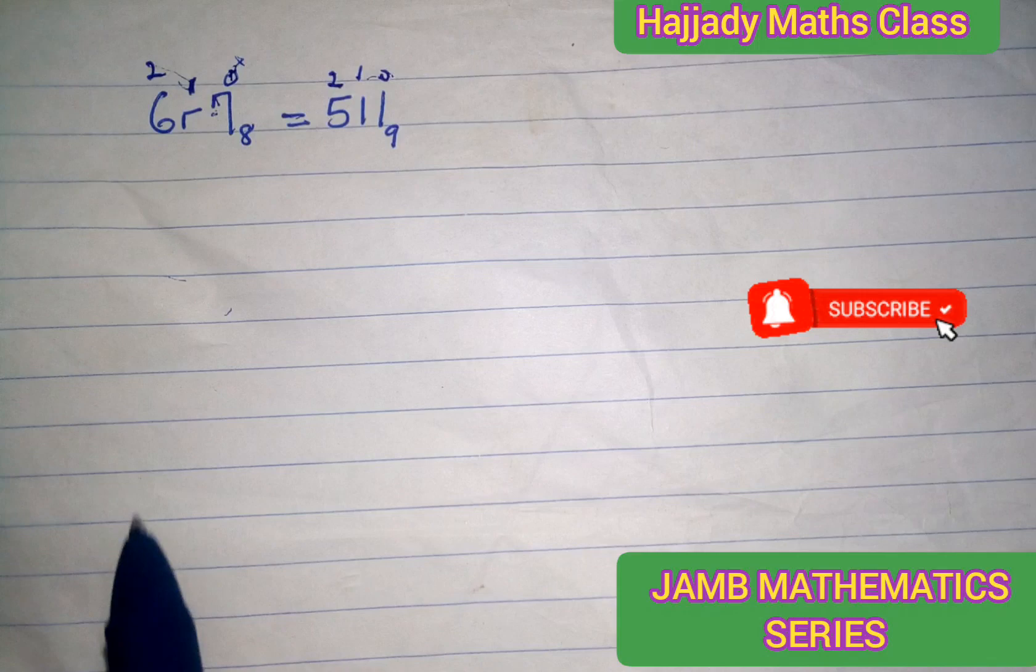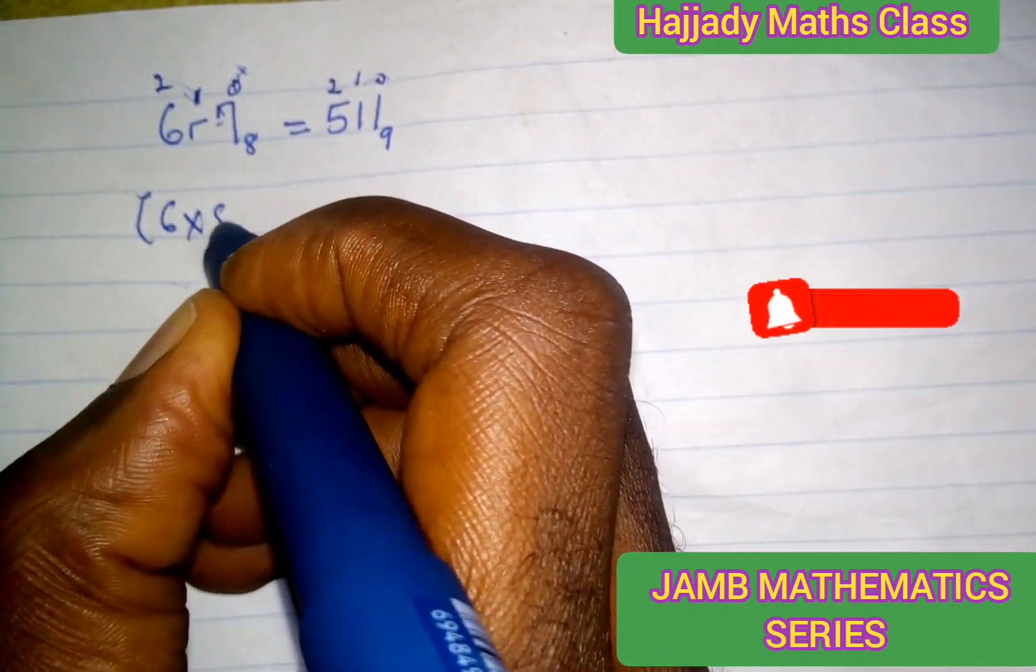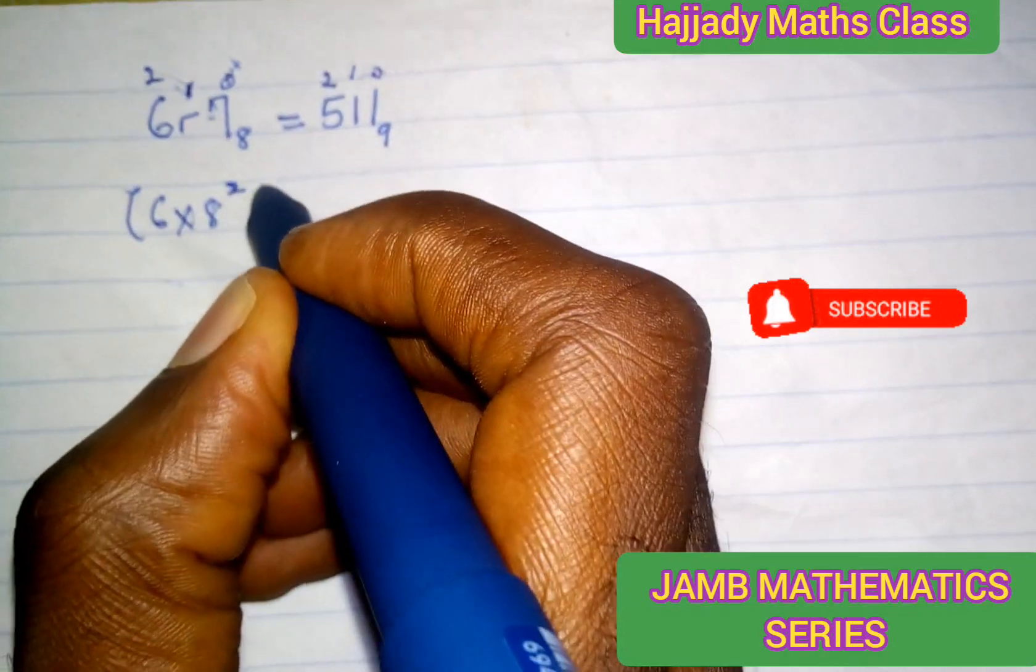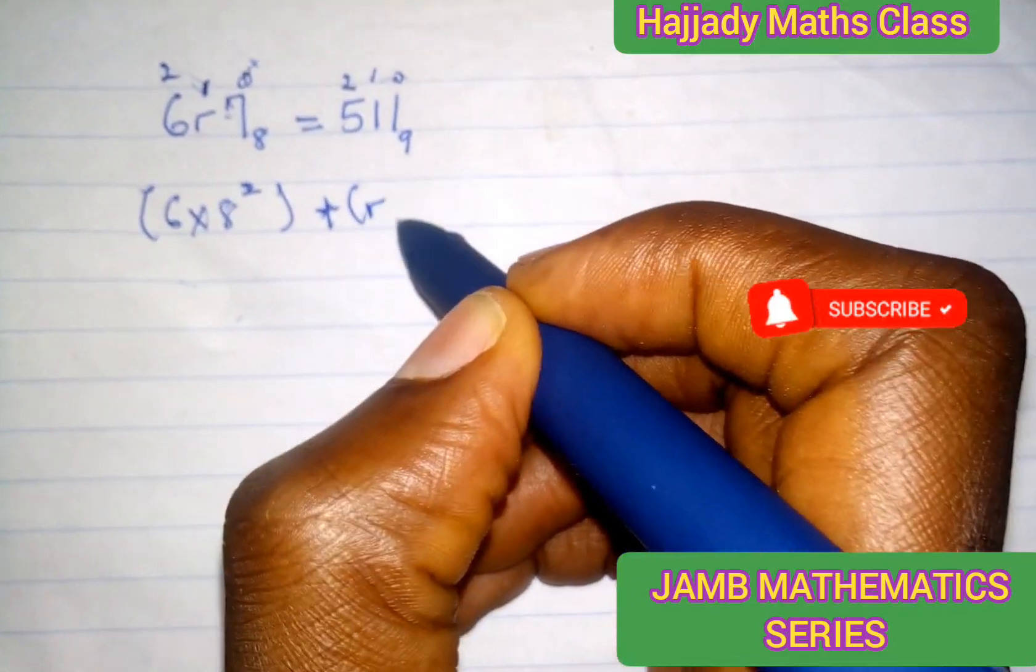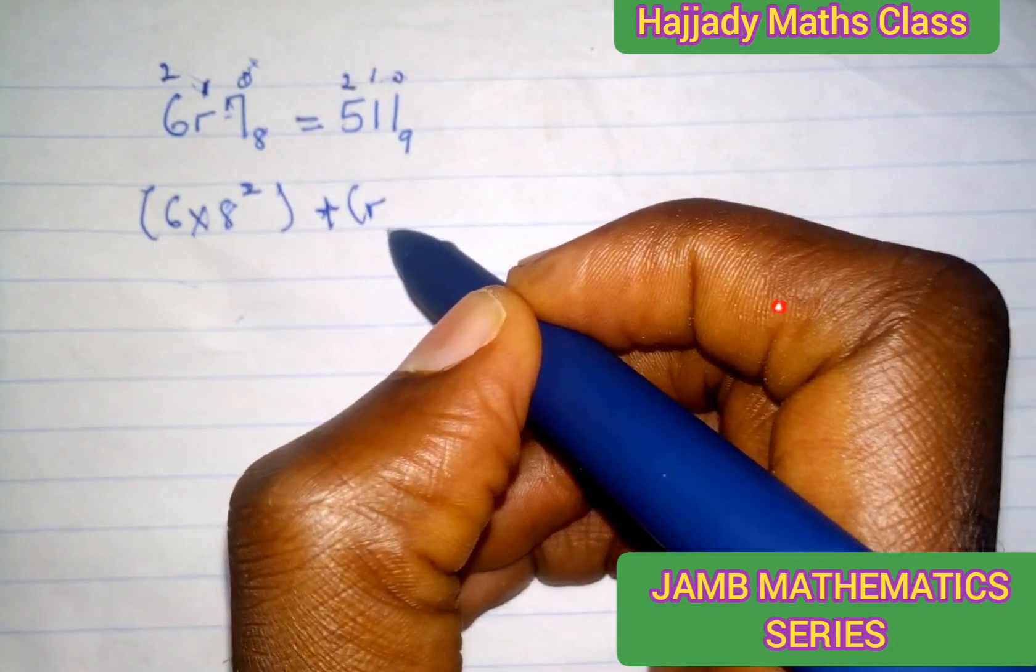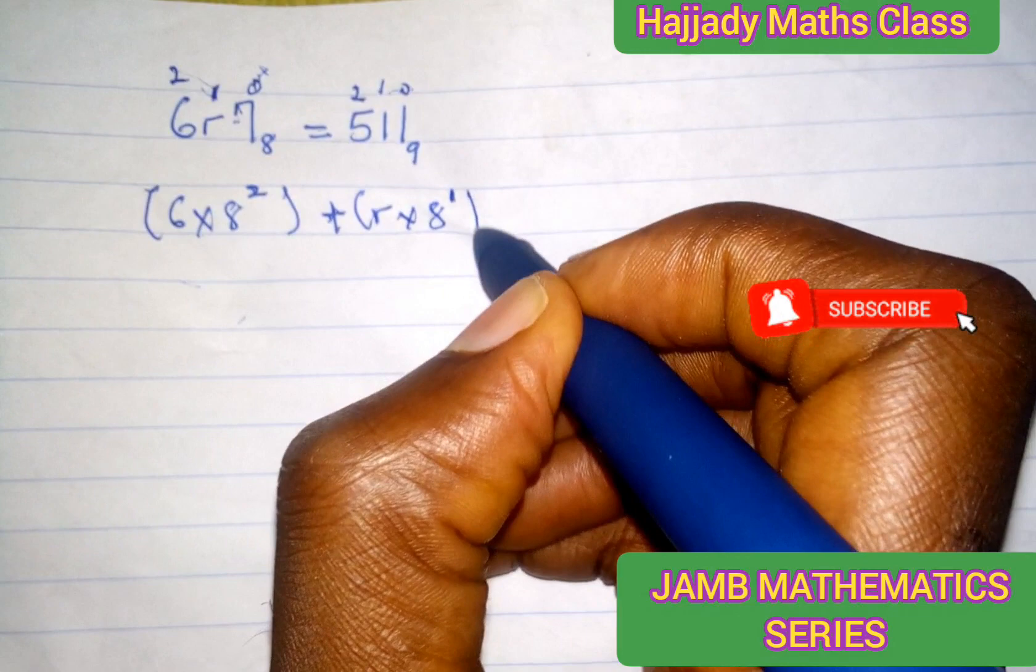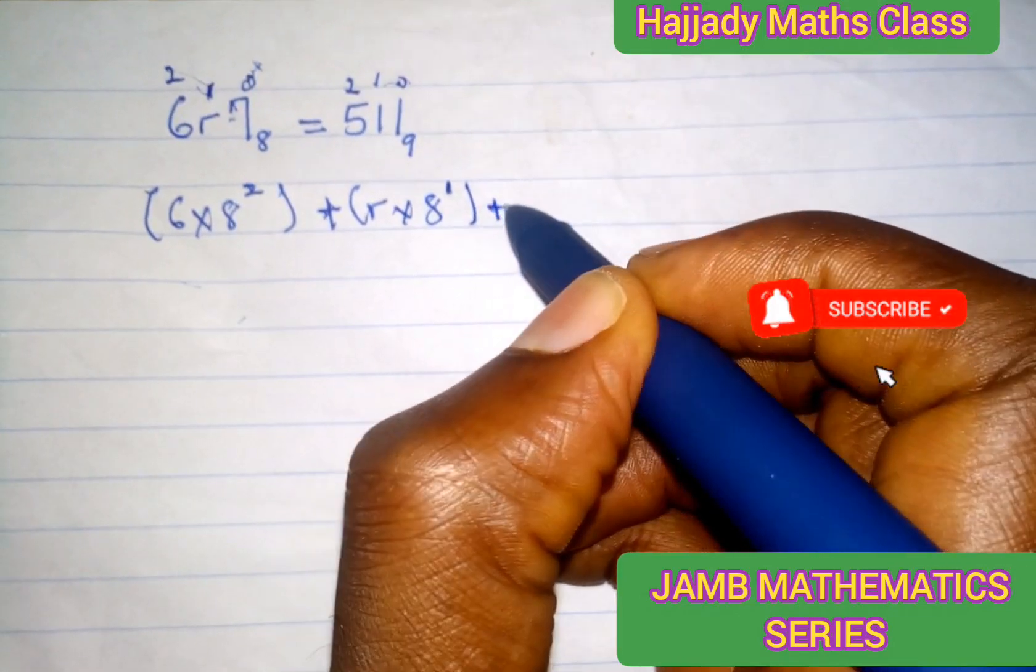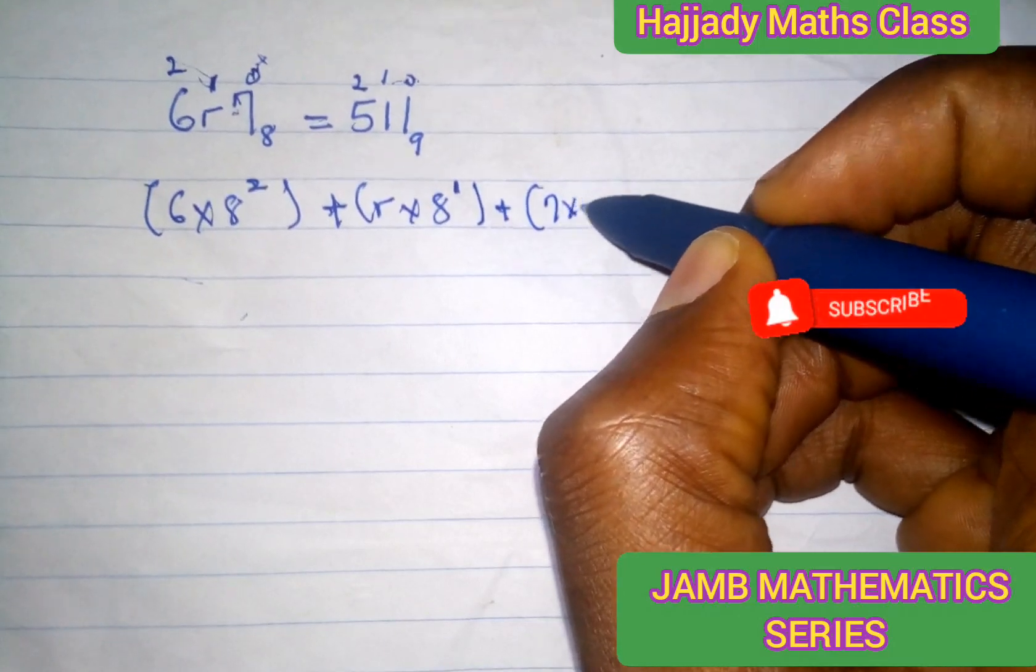So in doing this, we have 6 times the base, which is 8 raised to the power of 2, plus R times the base, which is 8 raised to the power of 1, plus 7 times the base 8 raised to the power of 0.